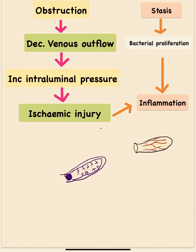Additionally, obstruction causes stasis of the appendix contents, since secretions continue within the lumen but cannot drain. This stasis leads to bacterial proliferation — such as E. coli — which further stimulates inflammation. So obstruction leads to inflammation through two key mechanisms: ischemic injury from increased intraluminal pressure and decreased venous outflow, and bacterial proliferation from content stasis.